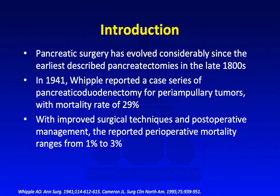Pancreatic surgery has evolved considerably since the earliest described pancreatectomies first performed in the late 1800s. Back then, outcomes weren't very good — no clean surgical technique, no good anesthesia. All that changed in 1941 when Dr. Whipple reported a case series of pancreaticoduodenectomy for periampullary tumors, and patients did considerably better, though mortality was still 29%. Today, with improved surgical techniques and post-operative management, perioperative mortality now ranges from only one to three percent.